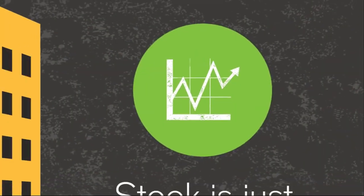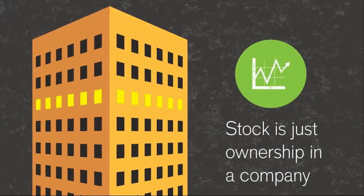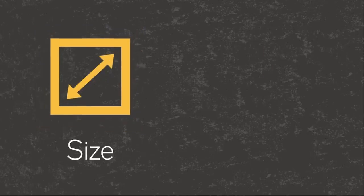Stock is just ownership in a company. There are many ways to classify stock. Two major ones are size, called market capitalization or cap, and company location. Each classification has its own typical level of risk.